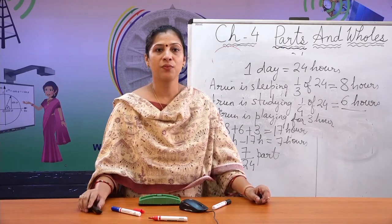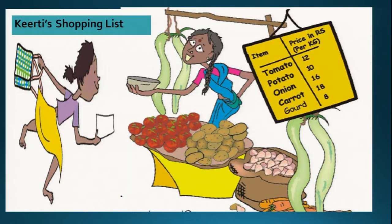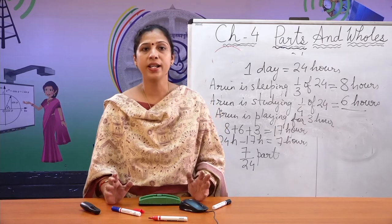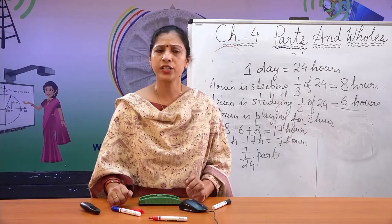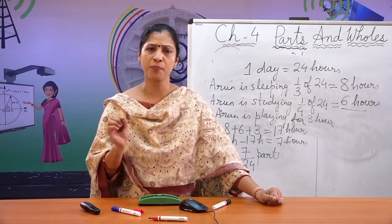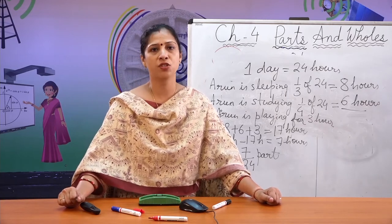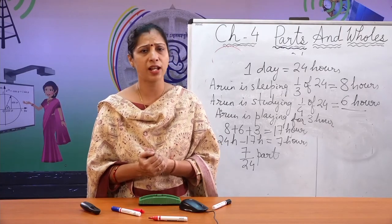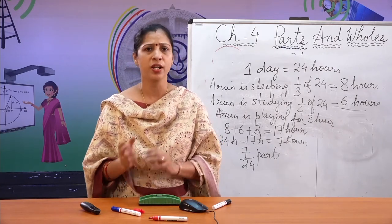Kirti is a very good girl who helps her mother. One day her mother gave her a shopping list to buy vegetables from the market. Kirti happily went to Chinnamma's shop. Chinnamma's price board shows: tomato = ₹12 per kg, potato = ₹10 per kg, onion = ₹16 per kg, carrot = ₹18 per kg, and gourd = ₹8 per kg. We need to calculate how much Kirti will pay.